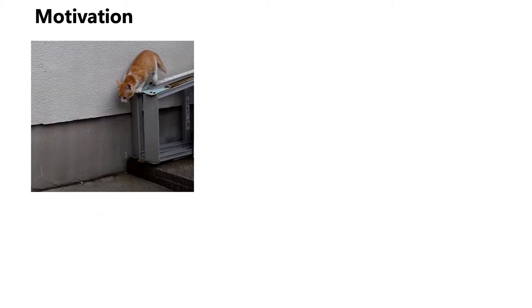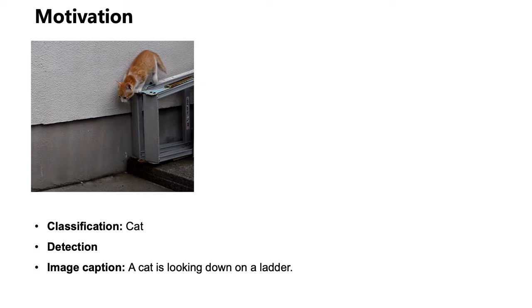Let's first see a picture and try to imagine how current computer vision tasks deal with this picture. Image classification may tell you this is a cat, object detection further provides the location of the cat, and then in the captioning system, we will see a cat is looking down on a ladder. Are these tasks already enough for testing the ability of visual understanding?